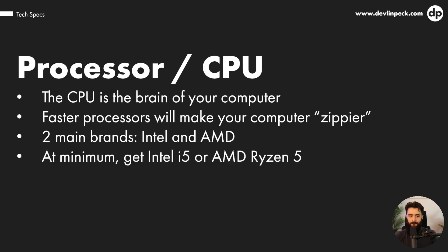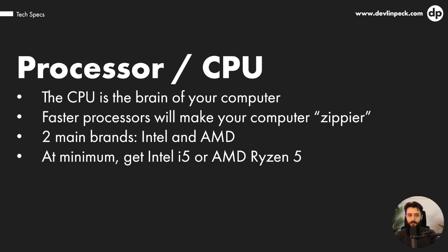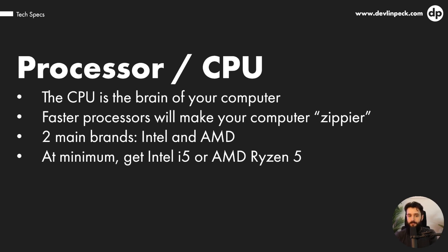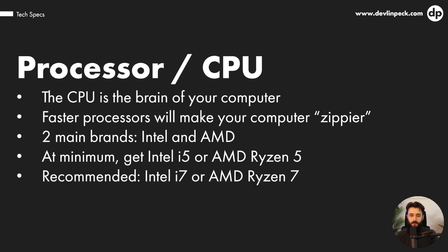There are two main brands: Intel and AMD. At minimum, you'd probably want to get an Intel i5 — it goes up to i7 and i9, so generally higher is better with those Intel chips. If you're going with an AMD machine, you want at minimum a Ryzen 5, and those numbers go up as well. Recommended is the Intel i7 or the Ryzen 7 — aim for those. But if the machine you're looking at has an i5 or Ryzen 5, you'll be okay. If you want your machine to be more future-proof or do heavier work, the i7 or Ryzen 7 would be better. For just e-learning authoring tools and some light video and photo editing, the i5 and Ryzen 5 will be great.